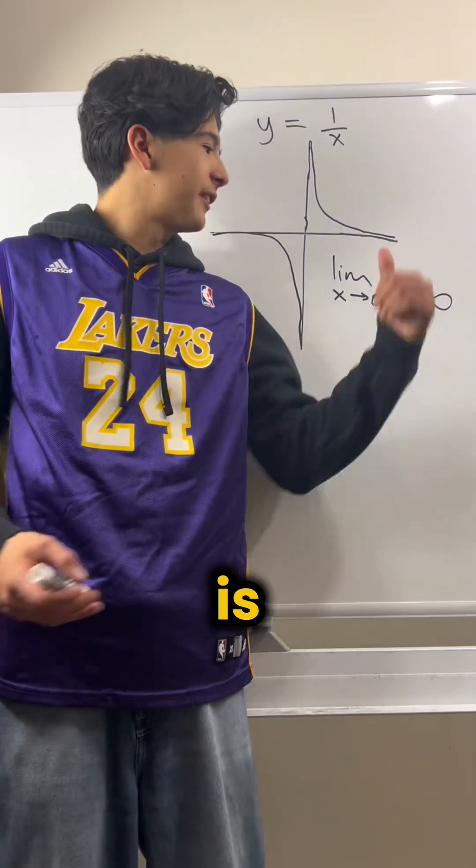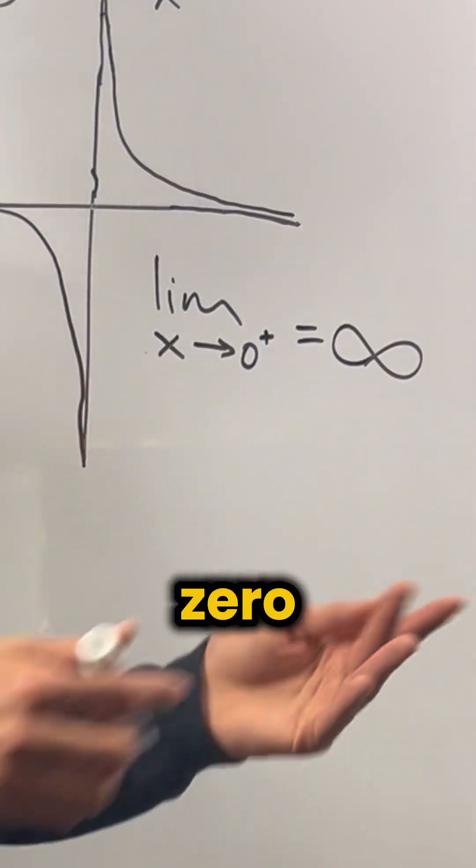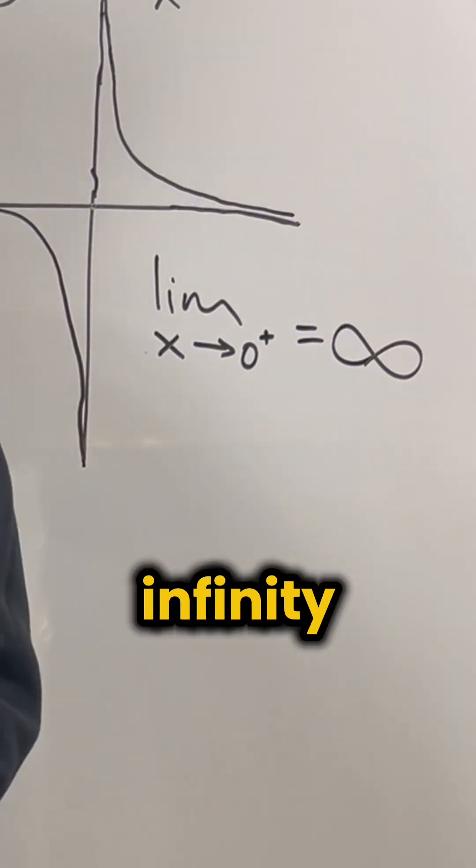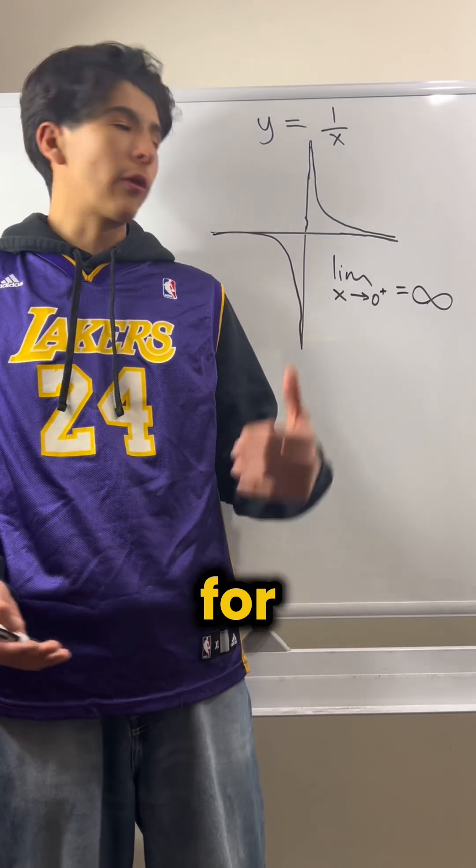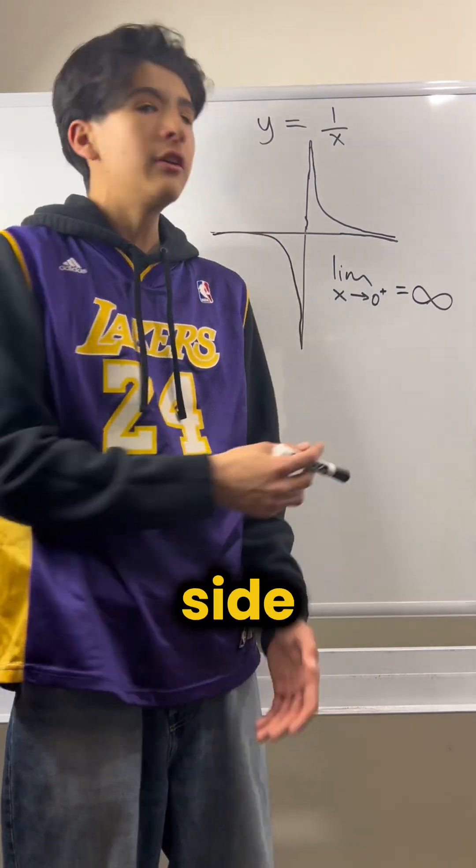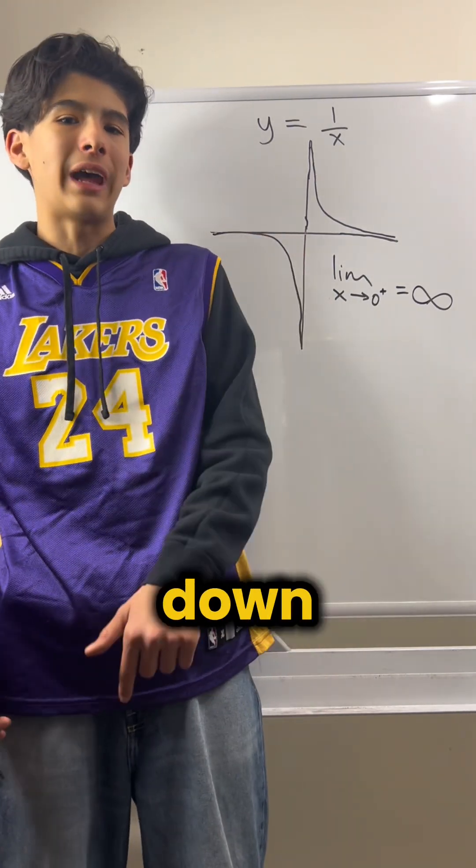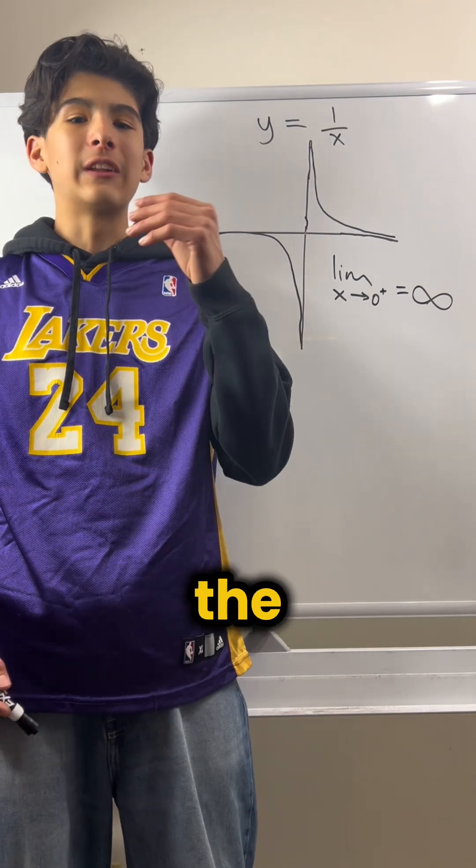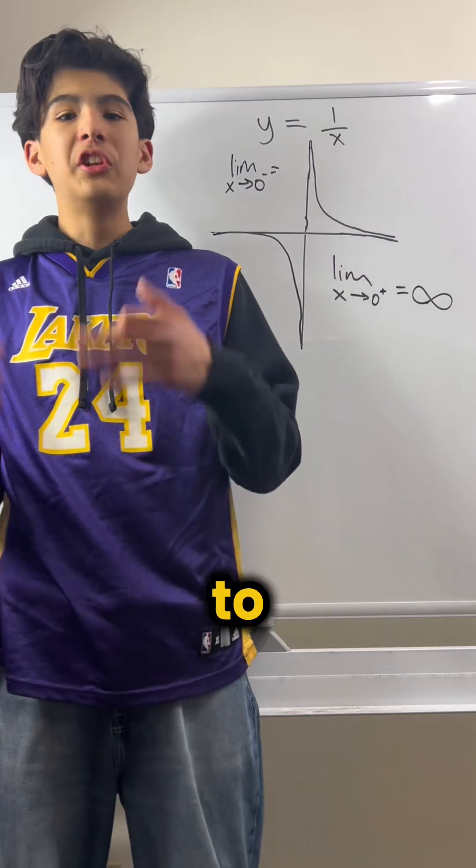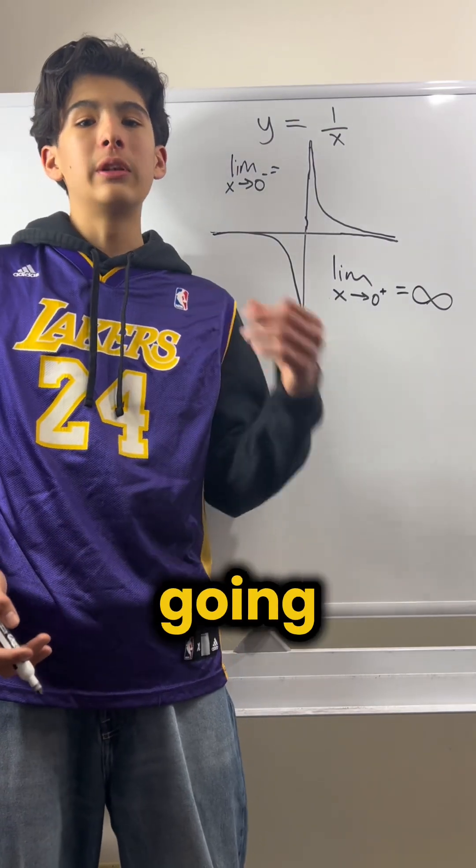Now what this is saying is as x gets really, really close to zero from the positive side, it just will approach infinity. We could do the same for the negative side. So as x approaches zero from the negative side, you'll see that it goes way, way, way down. So we can write that the limit as x approaches zero from the negative side equals to negative infinity, since it keeps on going down.